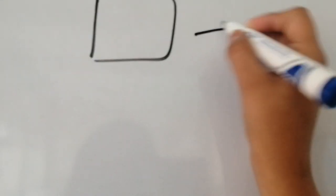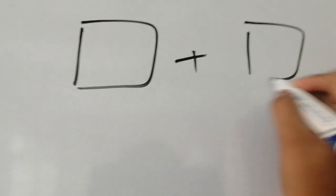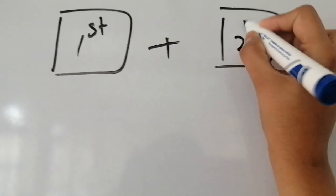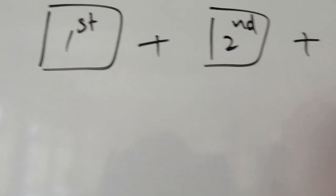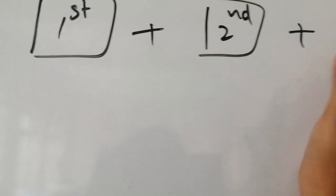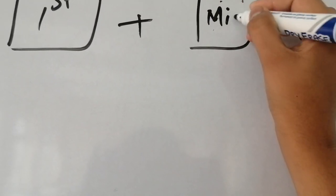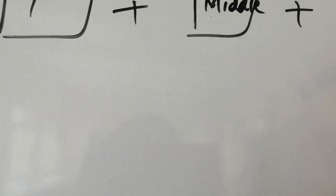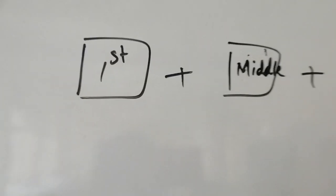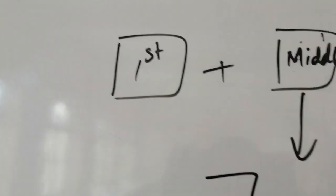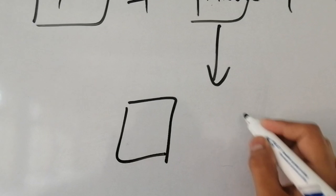If you have the first, second, and third term — we will call them the first, middle, and last term. If you have the first term, middle term, and last term, we will break the middle term into two terms.